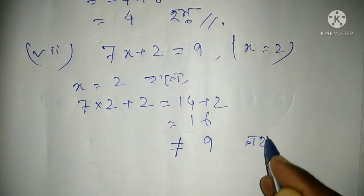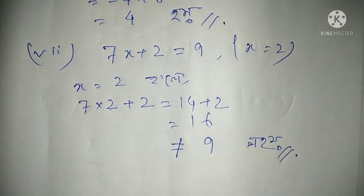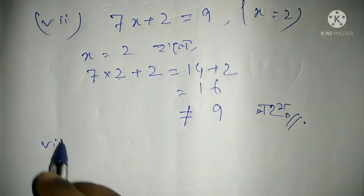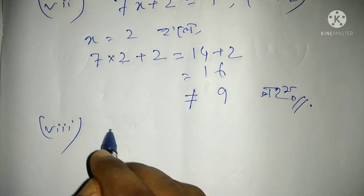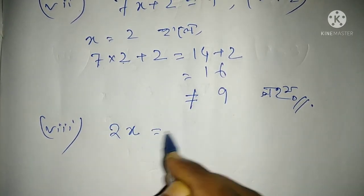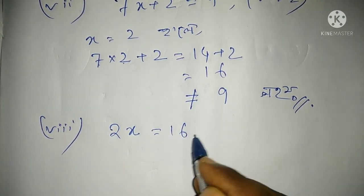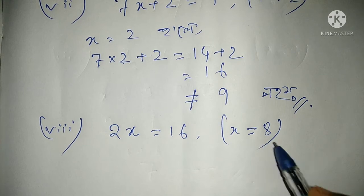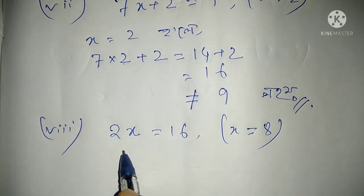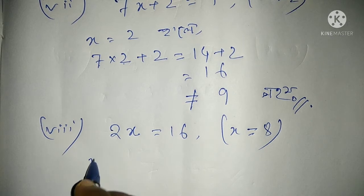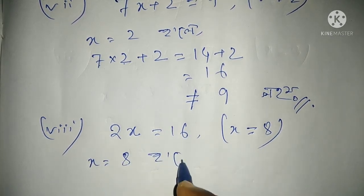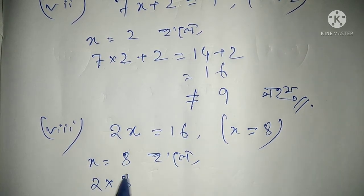This is the wrong answer. This is wrong. This is a wrong number. Number 8: twice x equal to 16. What is x? x equal to 8. Verifying: x equal to 8, 2 into 8 equals 16. It is correct.